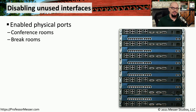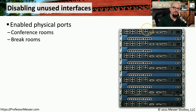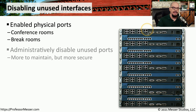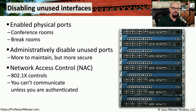Another important best practice when hardening a network is to administratively disable any interfaces that are not currently in use. This prevents someone from walking into a conference room or a break room, plugging into the network, and gaining access to the internal network. Many organizations take it a step further and implement network access control using 802.1x, meaning that users would need valid authentication before they were ever able to communicate on that network.